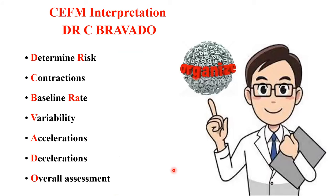To reach an agreed interpretation and proper management plan, follow the mnemonic DR C BrAVADO: DR for Define or Determine the Risk, C for Contractions, BR for Baseline Rate, A for Variability, A for Acceleration, D for Deceleration, and O for Overall Assessment. Following the same steps will lead to the same interpretation and management plan.